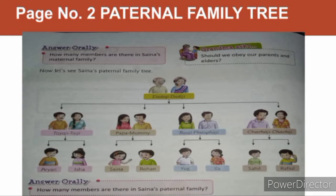Tayaji and Taiji have 2 children: Aaren and Isha. Papa and Mummy, Sina's parents, have 2 children: Sina and Rohan. Buaji's paternal family is having 2 children: Yug and Ila. Chachaji and Chachiji also have 2 children: Sahil and Rahul.